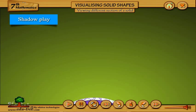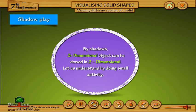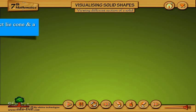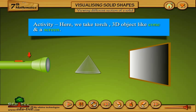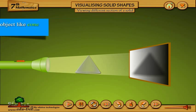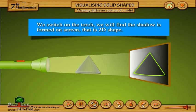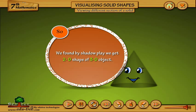Shadow play. By shadows, a 3-dimensional object can be viewed in 2 dimensions. Let us understand by doing a small activity. Here, we take a torch, a 3D object like a cone, and a screen. We switch on the torch and find that a shadow is formed on the screen — that is a 2D shape. So, by shadow play we get the 2D shape of a 3D object.